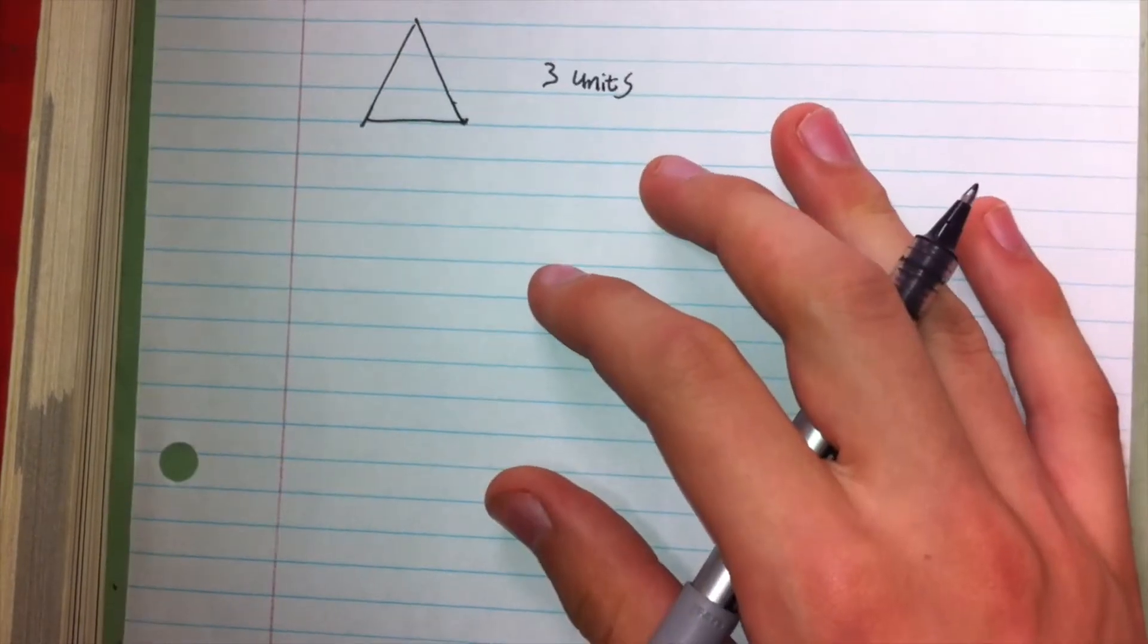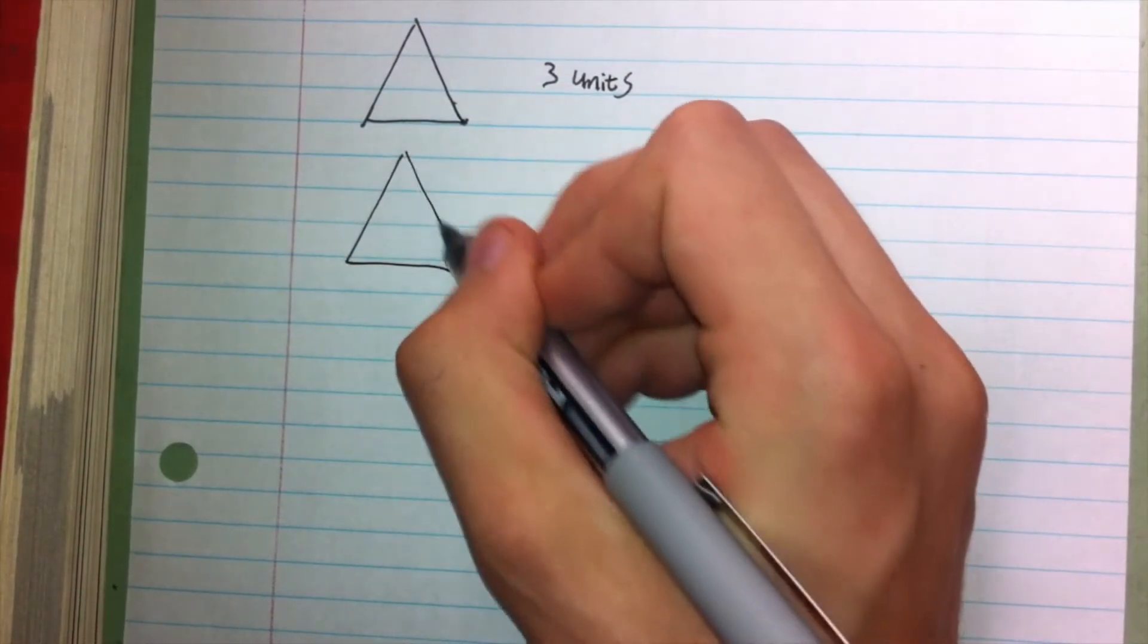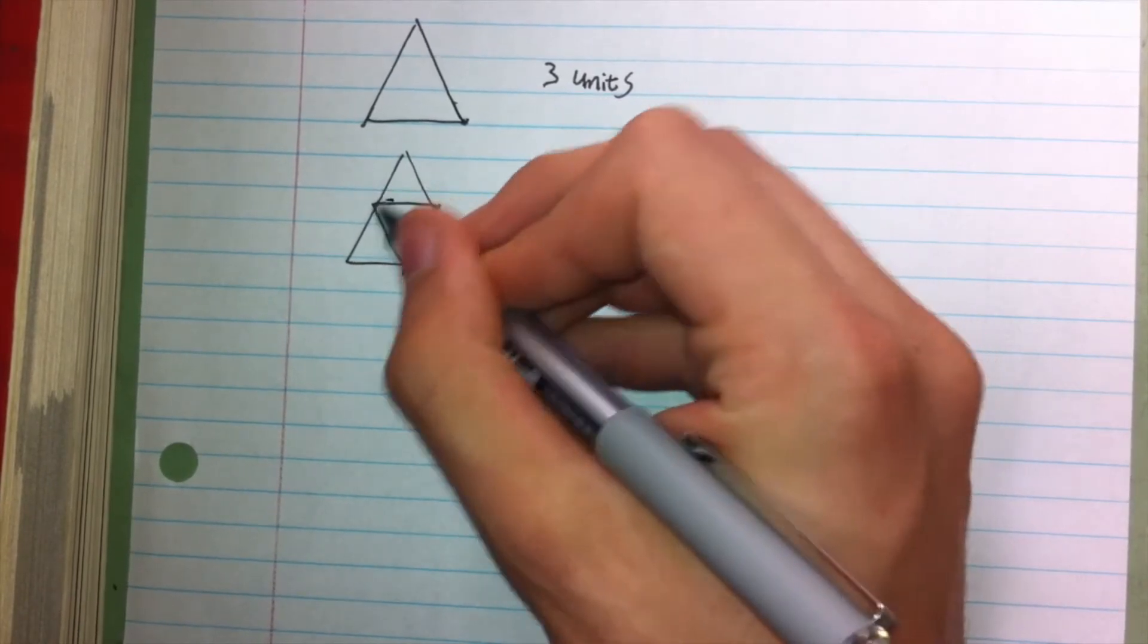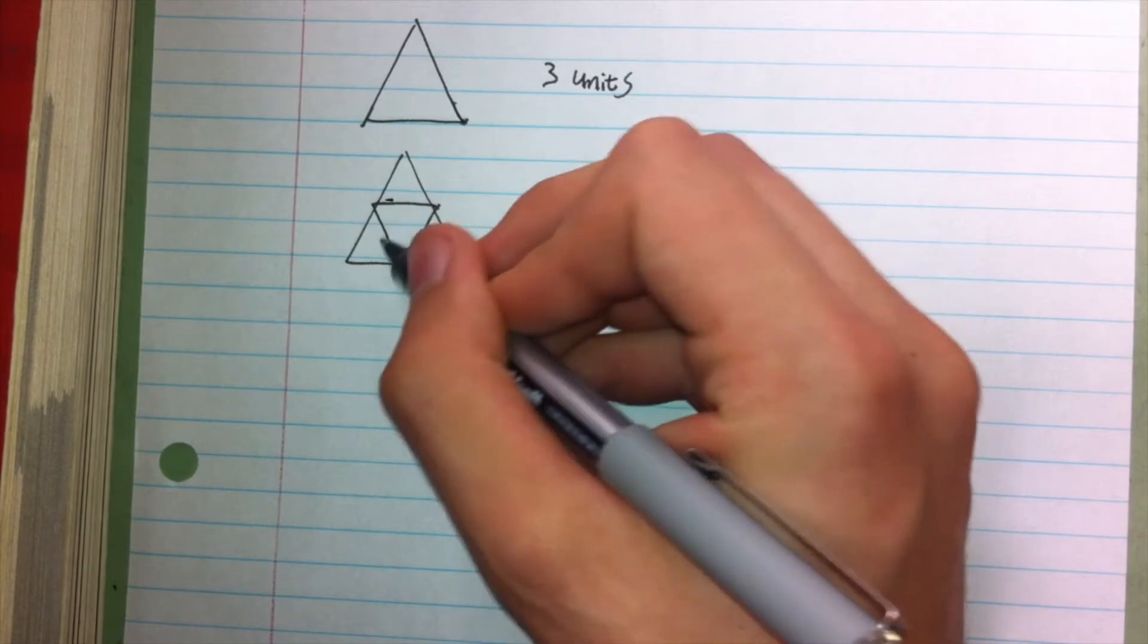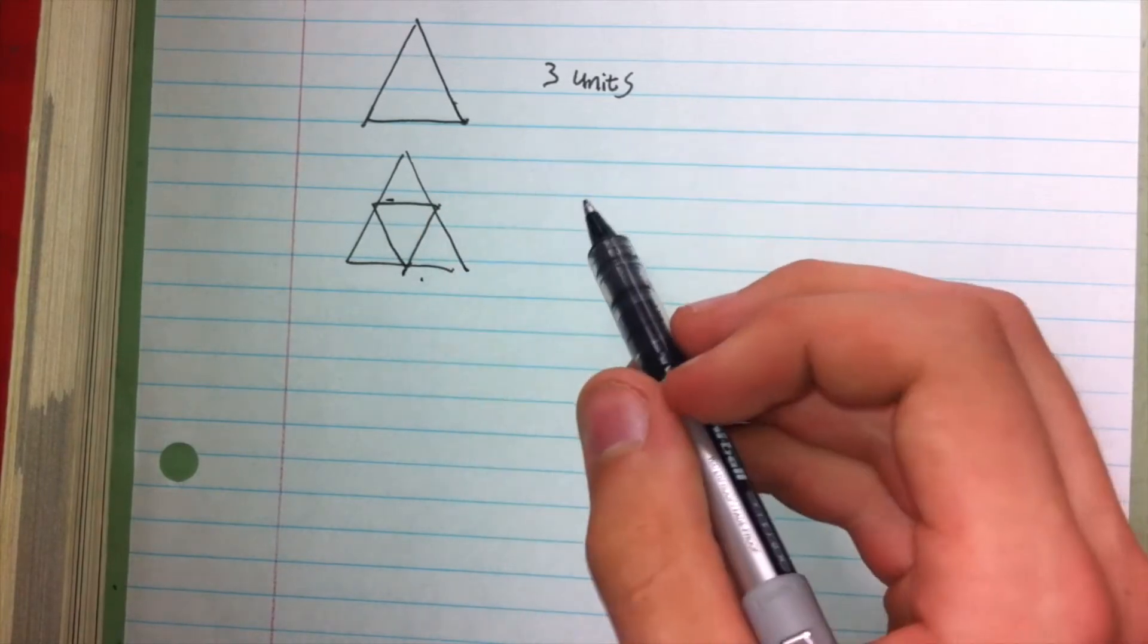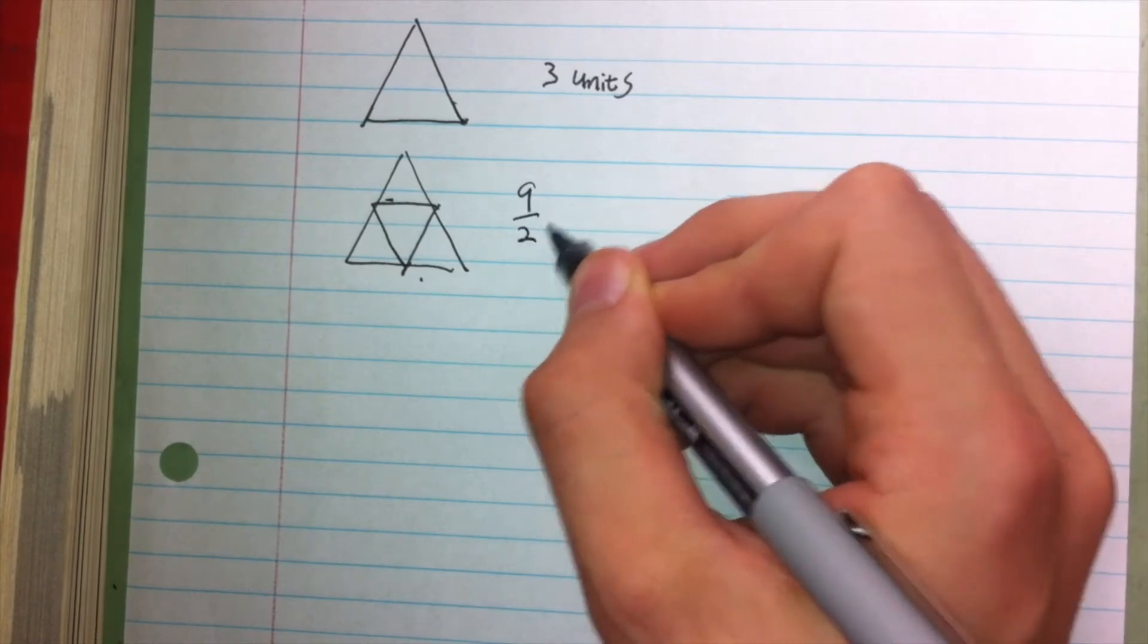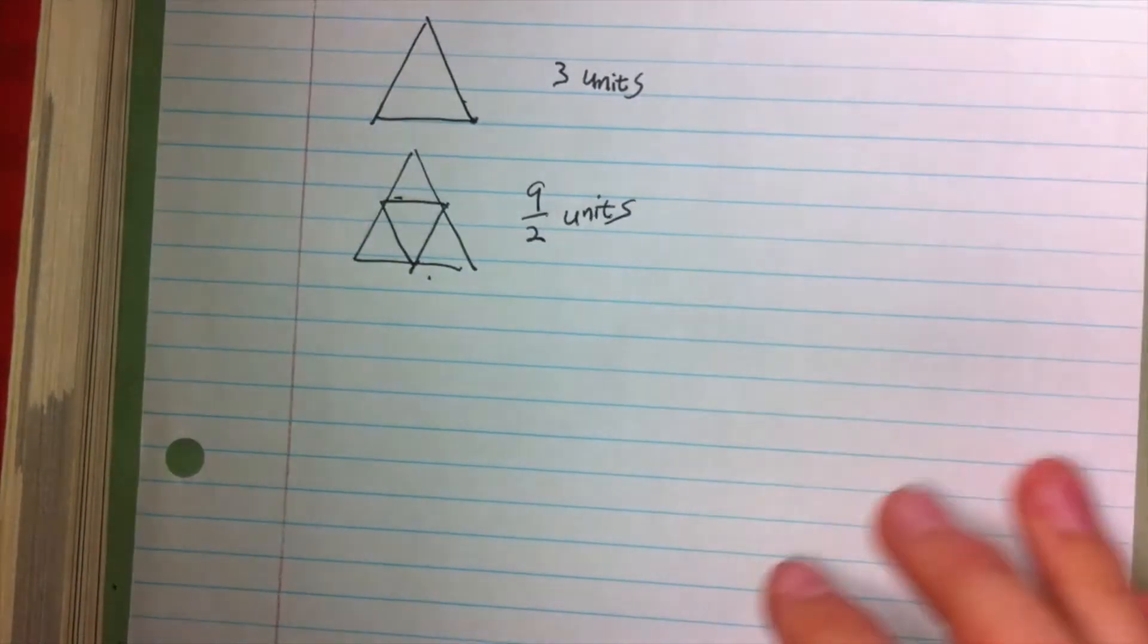In the second stage here, we again have an equilateral triangle, but each of those unit lengths is split into two half-unit lengths, and we've added three more half-unit lengths here in the center. And so what we have is nine-halved units as the perimeter of the triangle.